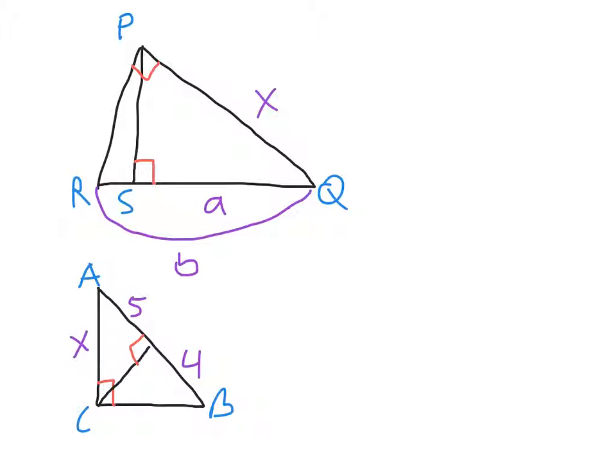So, in this case, what's going to happen is we have we want to find the leg AC and we're given the two parts of the hypotenuse 5 and 4. So, first, you have to set up the proportion. The geometric mean is x, the leg. One of the extremes is the part of the hypotenuse that connects to the leg. That, in this case, would be 5. And the other extreme is the entire hypotenuse. That's this whole length here, which would be 5 plus 4, which is 9.